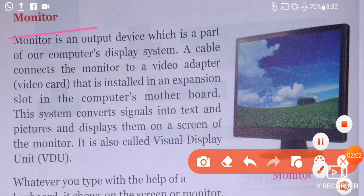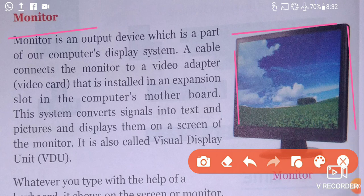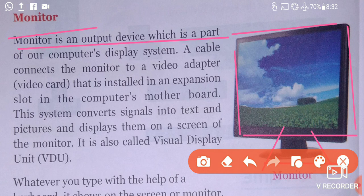The first output device is the monitor. Everyone has seen it in the computer lab, so everyone knows what the monitor looks like. Monitor is an output device which is a part of our computer's display system.